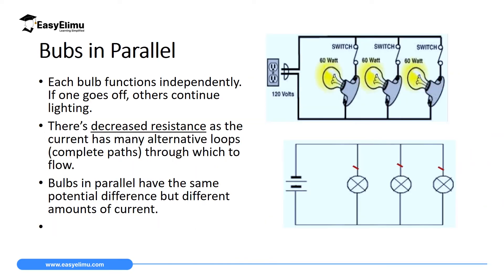We also have different arrangements of bulbs in a circuit, and we are going to begin with the arrangement of bulbs in parallel. If you have bulbs in parallel, then it means they function independently in such a way that if one goes off, then the rest will continue lighting. For you to make sure that happens, you give each bulb its own independent switch — switch one for bulb one, switch two for bulb two, and switch three for bulb three.